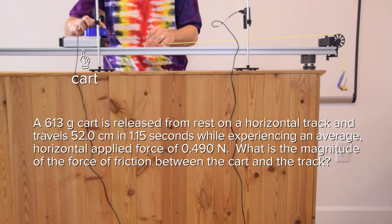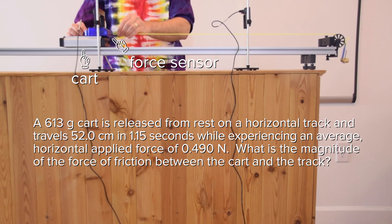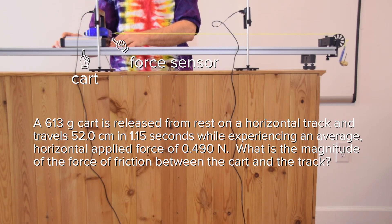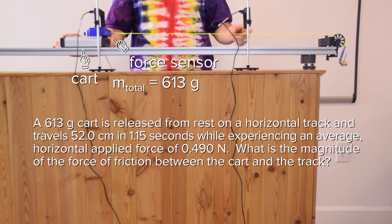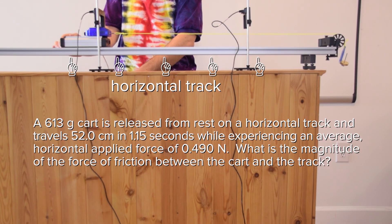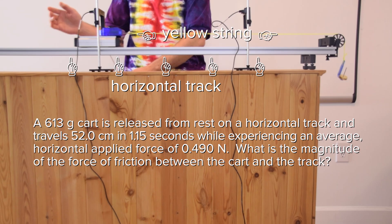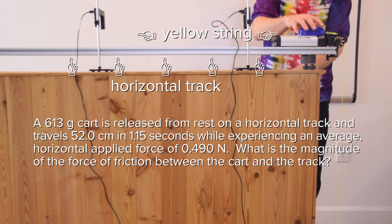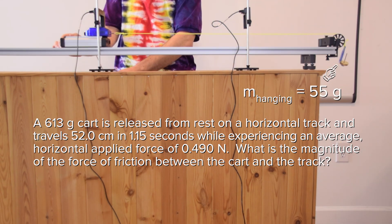You can see that we have a cart with a blue force sensor attached to the top of it, and the cart and force sensor have a total mass of 613 grams. The cart is on a horizontal track and there is a yellow string attached to the force sensor. The string goes over the pulley and on the other end of the string is a mass that will, through the string, apply an almost constant force to the cart.